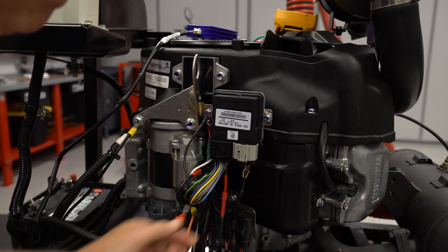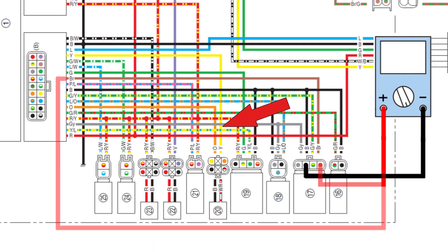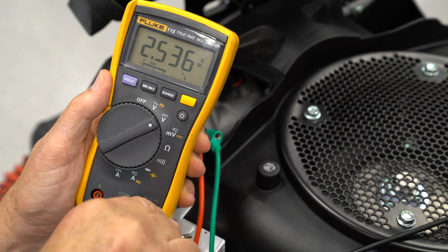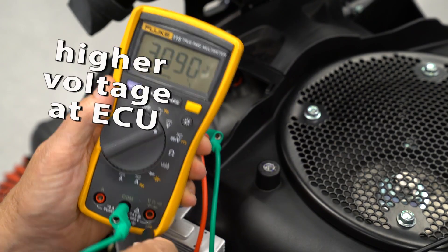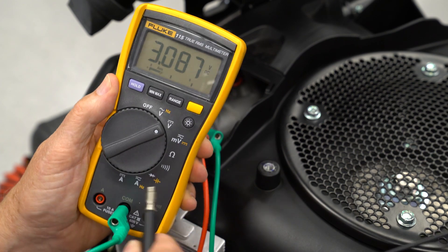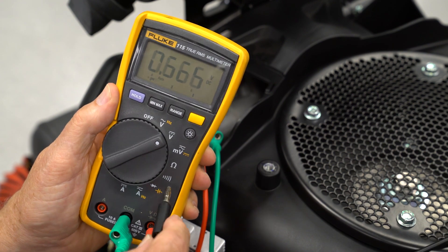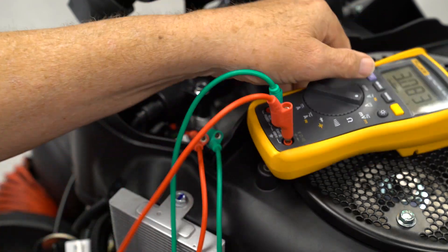Move the positive lead to the brown wire at the ECU. The voltage should be the same. If it's higher, there is unwanted resistance in the brown wire between the sensor and the ECU. Switch the positive lead back and forth between the sensor and the ECU a couple times to recheck the voltage readings. The readings will change as the air temperature changes.